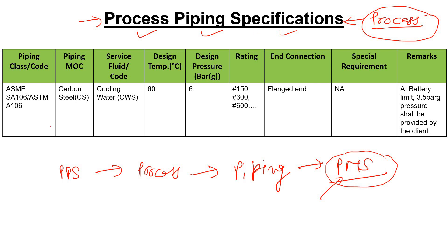Let's take an example. Suppose you are using a cooling water supply line. In that cooling water supply line you are using carbon steel MOC — so the MOC of this pipeline is CS. The piping code is ASME SA106 or ASTM A106. Here, 'class' refers to the code standard, not pressure classes like 150 or 300.